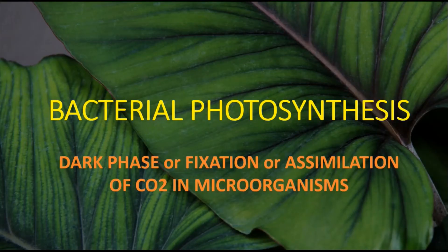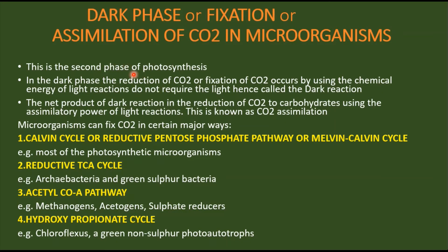In the previous part of the bacterial photosynthesis topic, we discussed the introduction to the second phase of photosynthesis, that is the dark phase. This is the second phase where carbon dioxide is fixed and converted into carbohydrates — also called carbon dioxide assimilation or fixation. This assimilation occurs in four major ways: the Calvin cycle, reductive TCA cycle, 3-hydroxypropionate, and the acetyl-CoA pathway. In this video we discuss the first pathway.